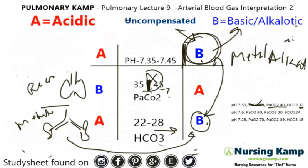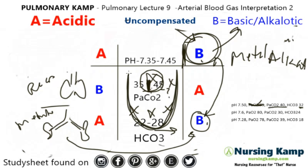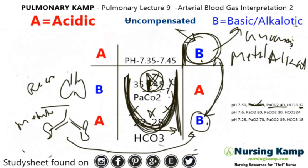Anytime you are landing in this middle section with one value, it is uncompensated. So if you connect the B to B with the PaCO2 in the middle, it is uncompensated metabolic alkalosis.